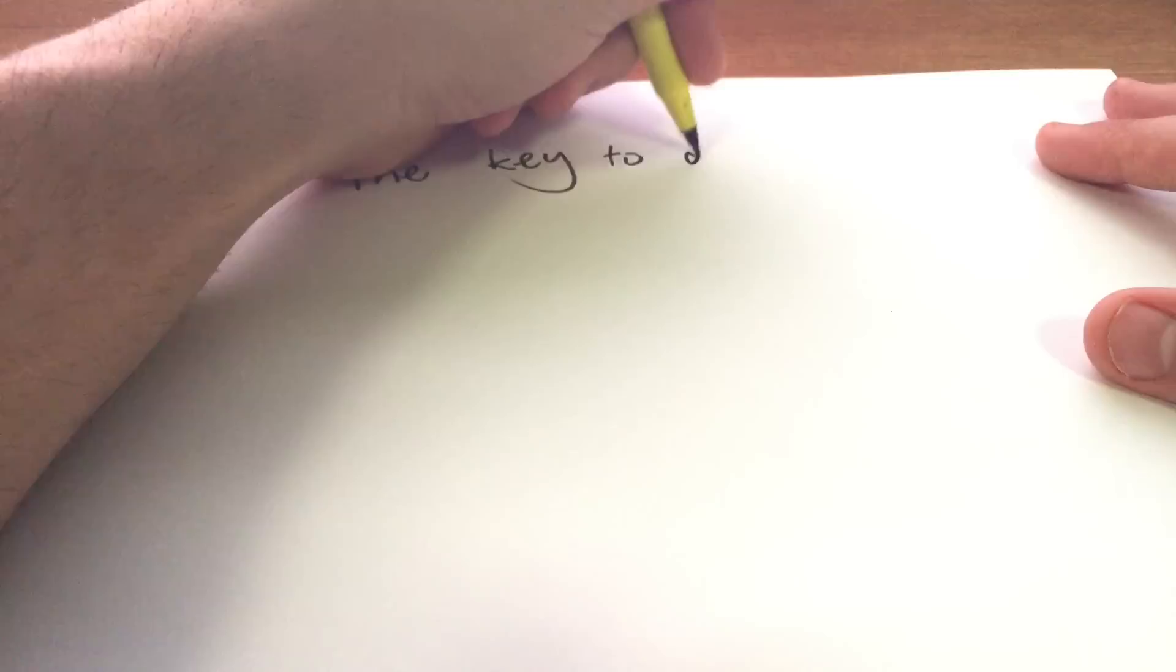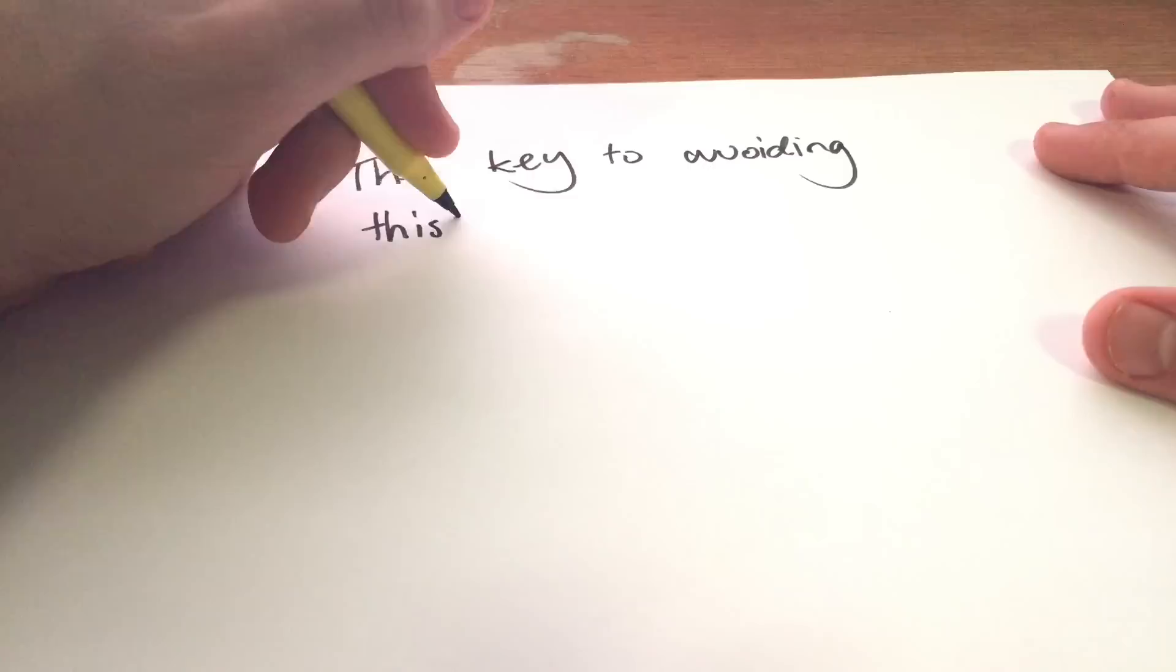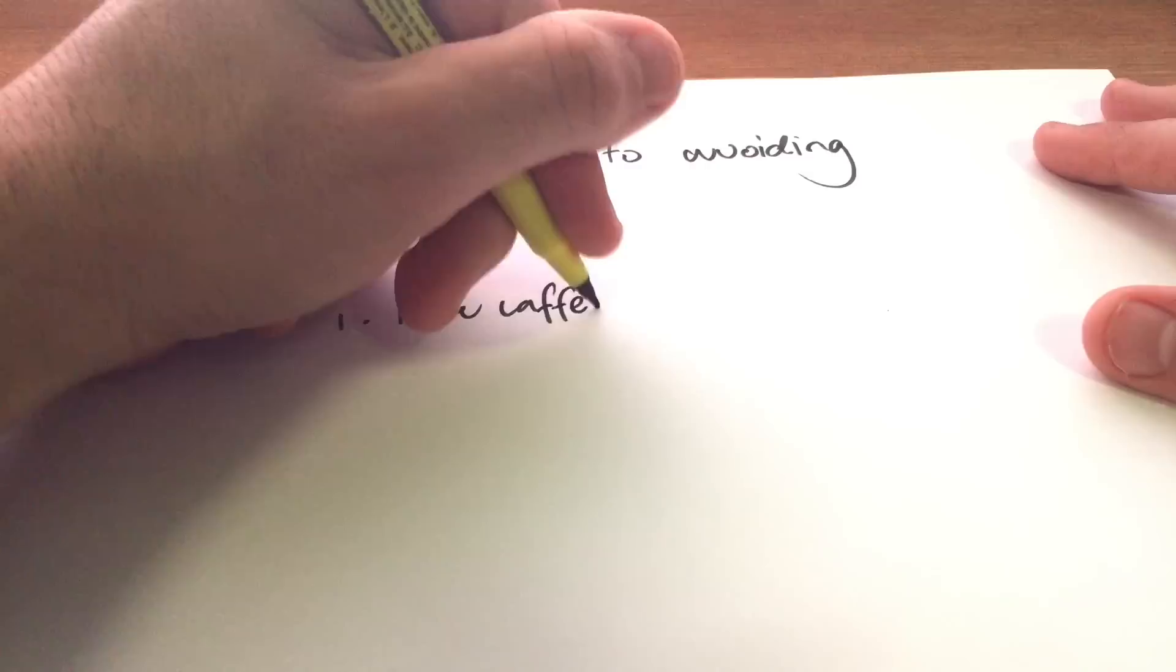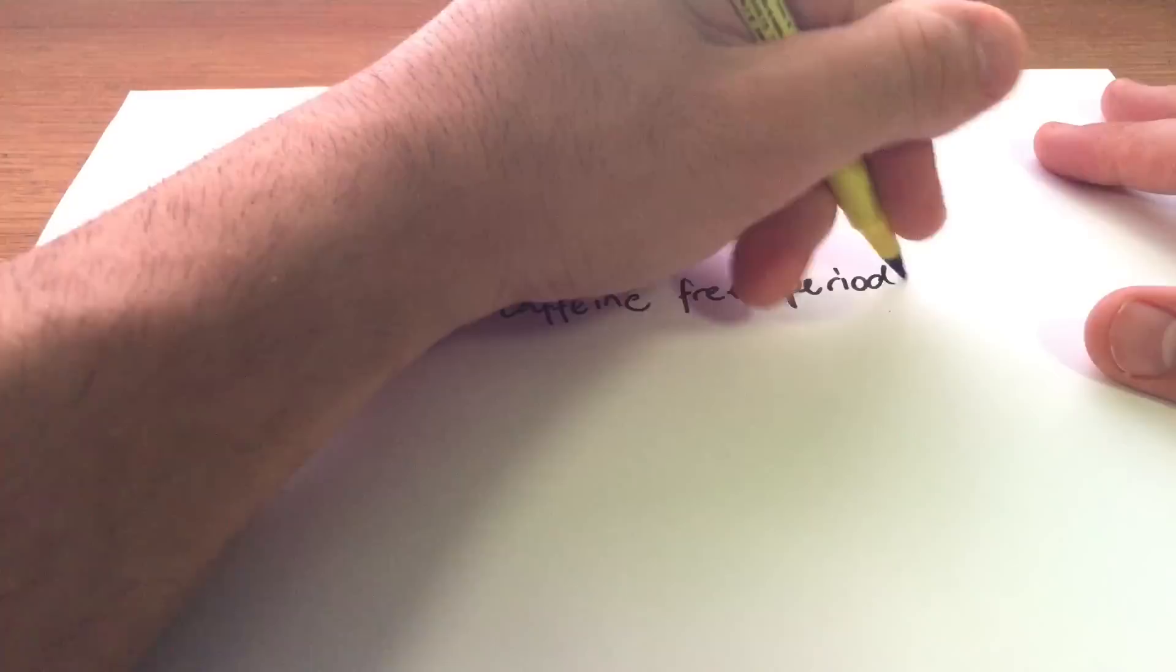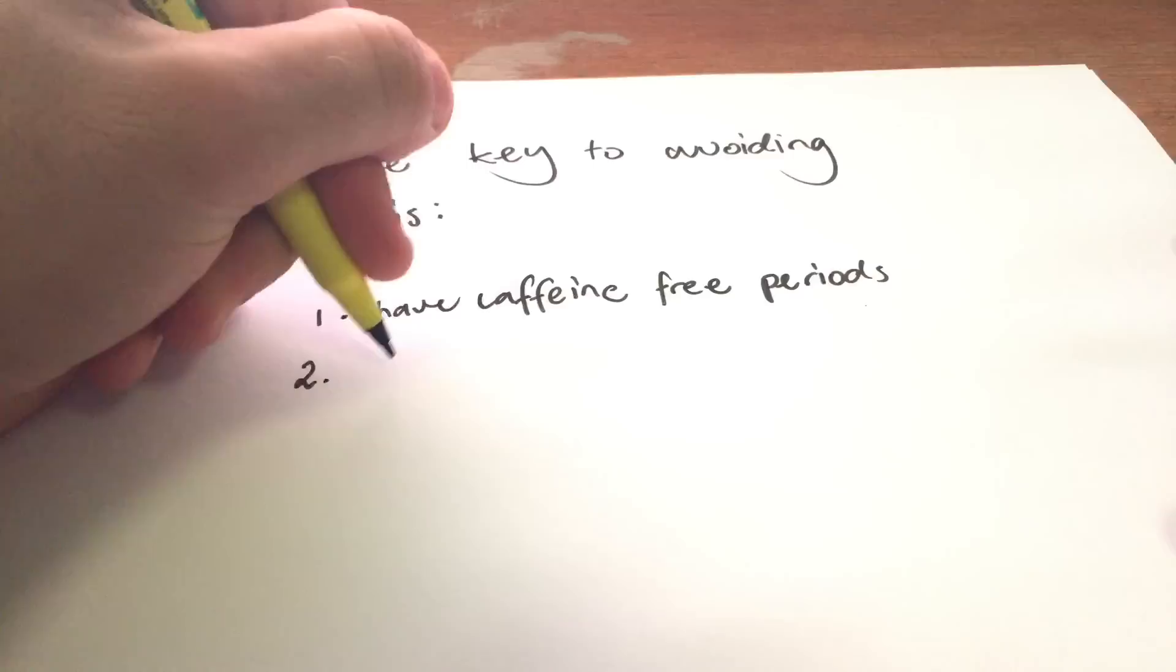So I'll just go over a few points now about how to avoid that build up of caffeine tolerance in our brain. So the first thing to do and I guess the most important thing to do is to ensure that you have caffeine free time or caffeine free periods. Basically going a couple days without having a coffee every now and then to allow our brain to readjust itself and get back to normal.